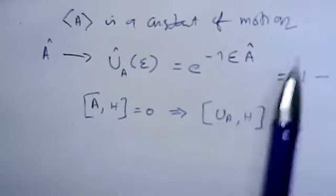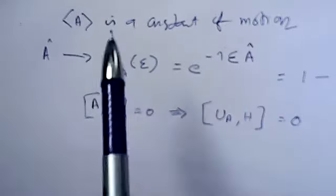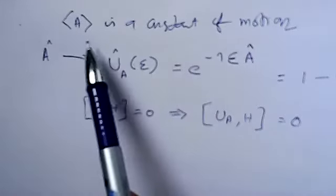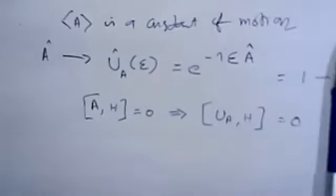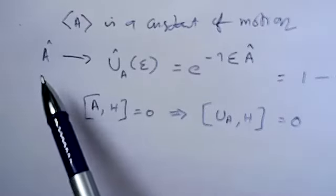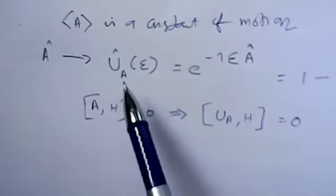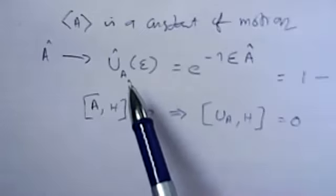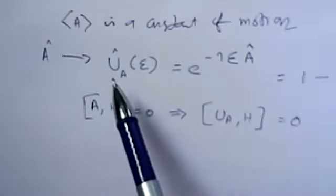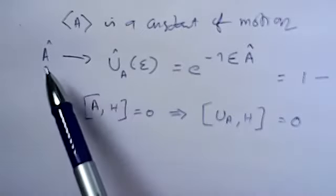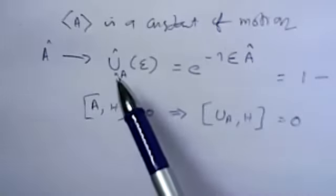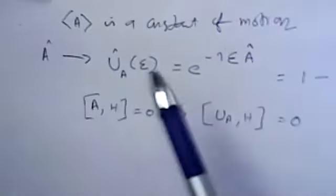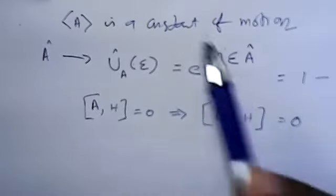We assume that A, the expectation observable, is a constant of motion. We know that for any Hermitian operator A, we can have a unitary operator U. So every Hermitian operator generates a unitary operator. That we have already learned in the last chapter.